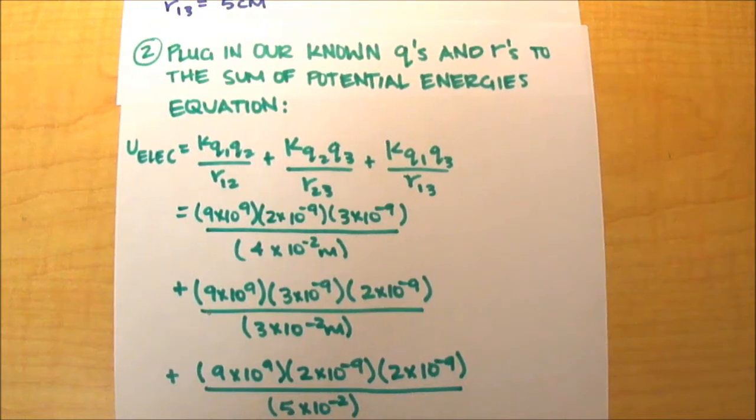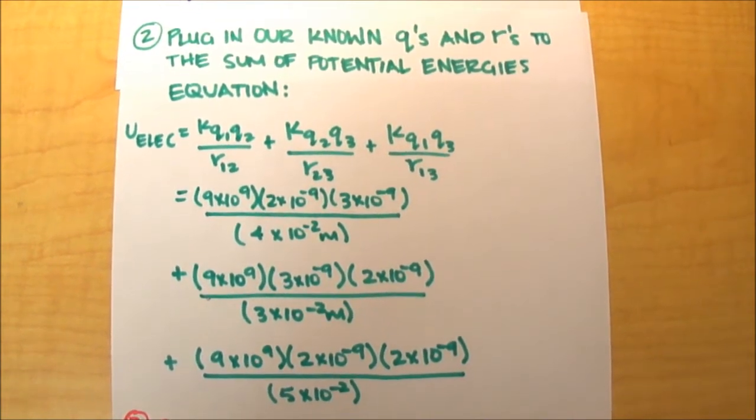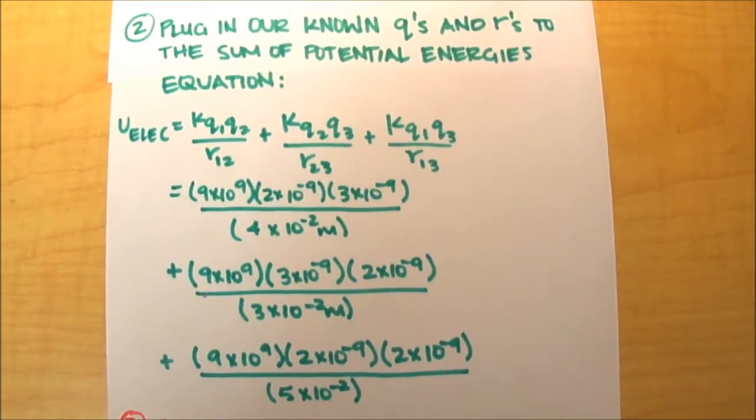Now, since k is our constant, nine times ten to the ninth newton meters squared per coulomb squared, we have everything we need to solve the equation, so we just have to plug everything in.